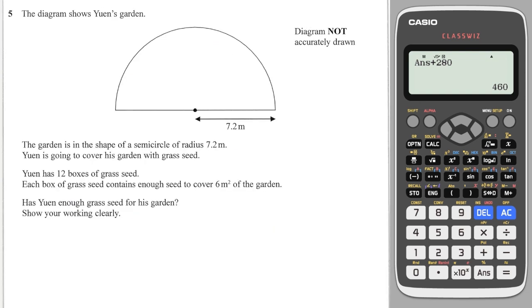And this is a popular question where they give you a garden, for example, and they need to work out the area of it, and then they're going to ask you whether or not you can cover that garden with enough of the grass seed. So let's first start off by doing the area.